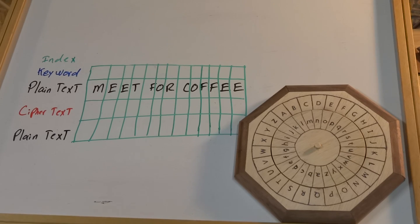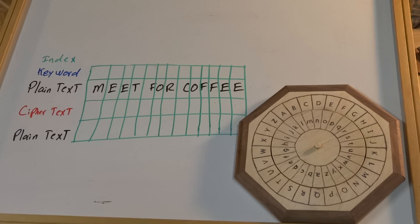Now we saw some rather easy ones — the shift cipher, a multi-index cipher. They're nice, but they can still be cracked via modern computer methods. But there is one that we can make with this which is fairly resistant even to modern computer hacking, and it's called a keyword cipher.